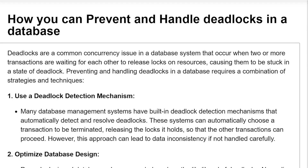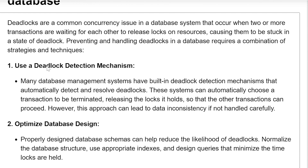How can you prevent and handle deadlocks in a database? Deadlocks are common concurrency issues in a database system that occur when two or more transactions are waiting for each other to release locks on resources, causing them to be stuck in a state of deadlock. Preventing and handling deadlocks requires a combination of strategies and techniques.